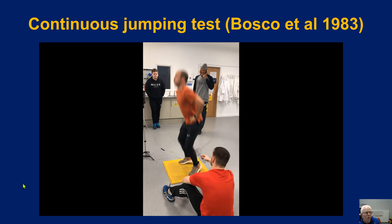Time is constant — five seconds — so the only variable with any form of rate is the number of jumps. But it's not about how quickly we accelerate, which is what power is; it's simply the number of jumps within a five-second period.